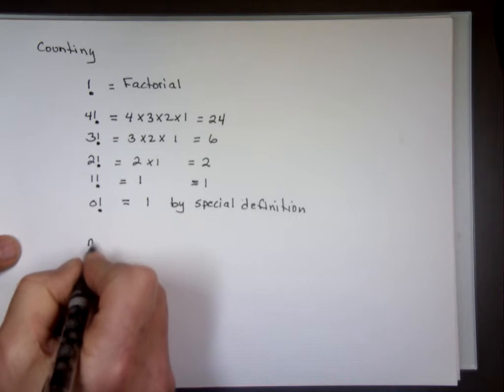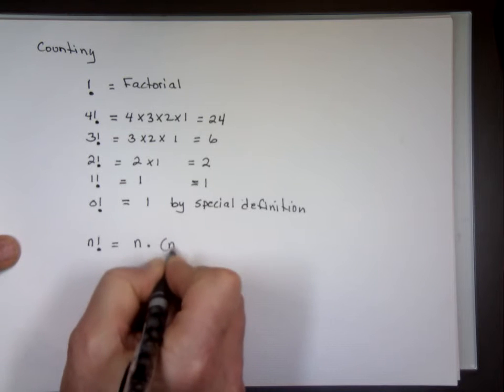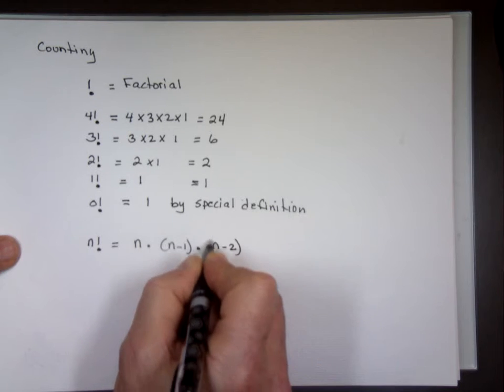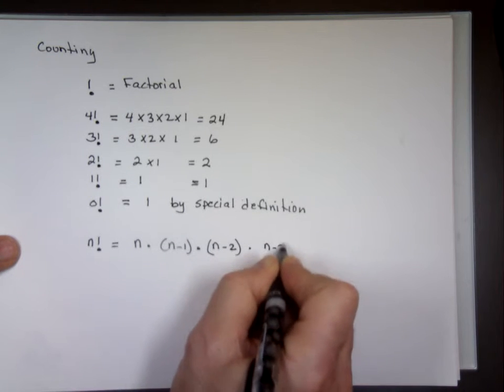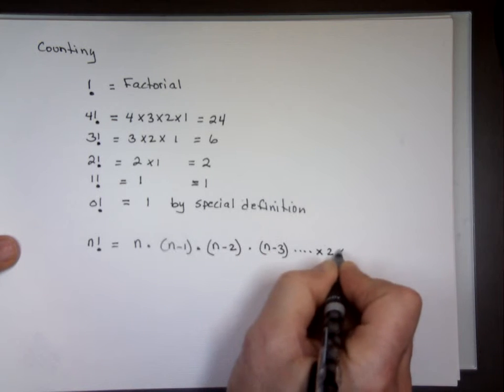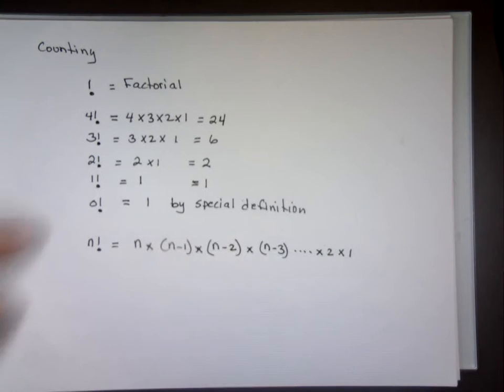Now the definition of n factorial, when you look at it, it says n times n minus 1 times n minus 2 times n minus 3. Each time decrease it by 1 all the way until you get to 2, then 1. That's the definition of n factorial. We're going to use that a lot in counting here. When we start talking about permutations and combinations, we'll use it. So I want to make sure you know what a factorial is before we start dealing with it.